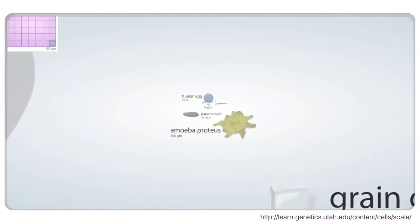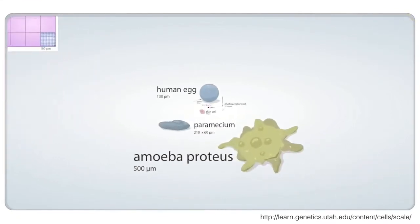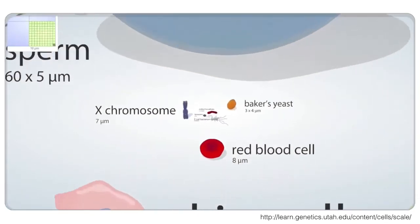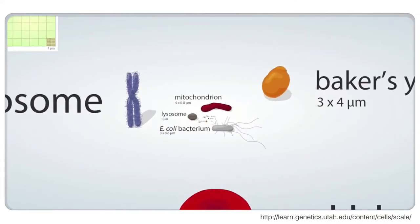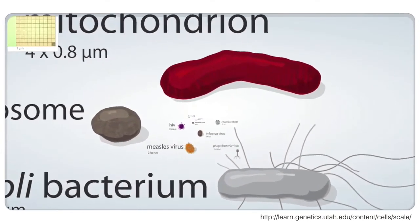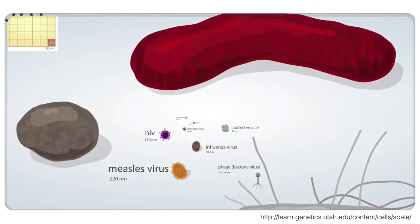You start to be able to see the larger cells, the paramecium, the skin cells, the human egg. It goes down way deeper though, much smaller cells, bacteria, mitochondria and organelles, and then into the world of viruses.